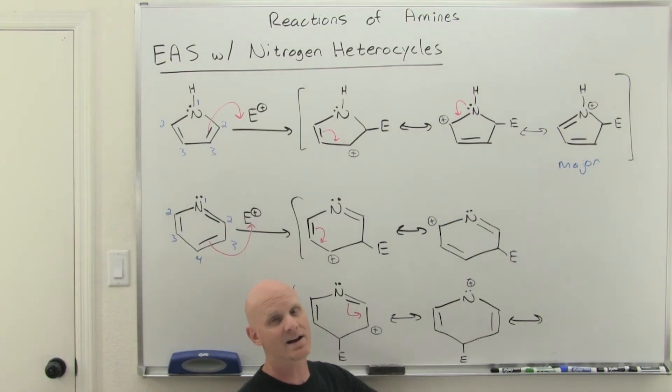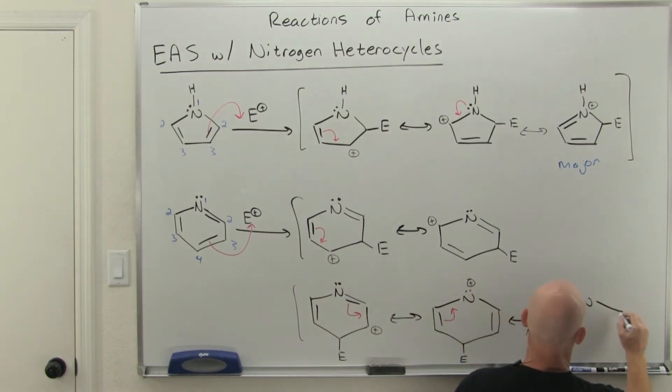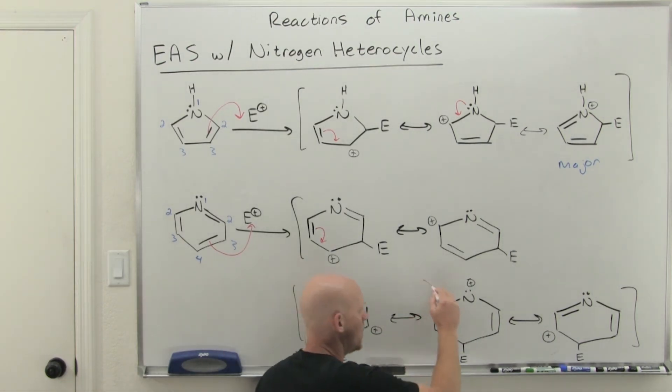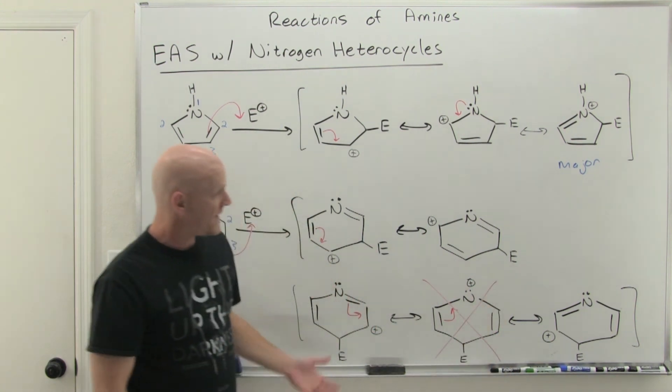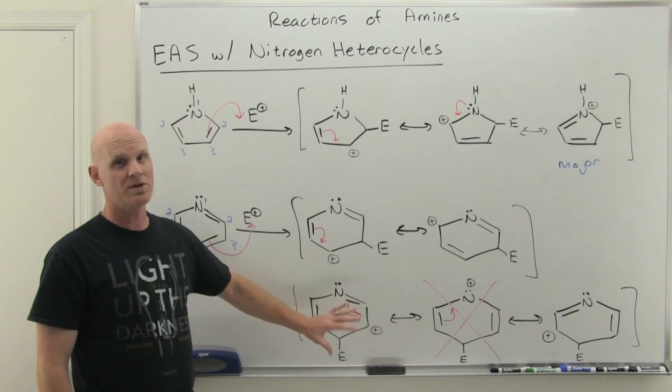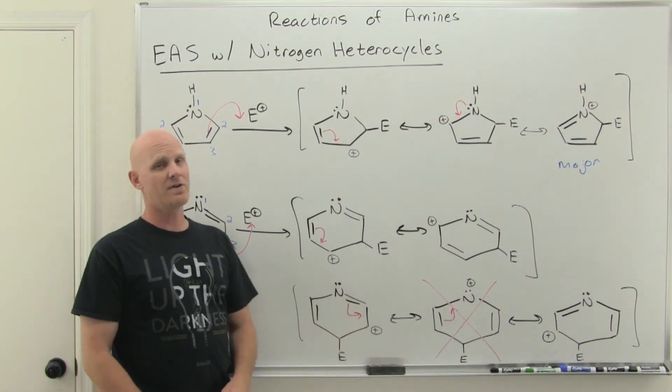Now, carbon not having a filled octet as a carbocation is fairly unstable. Nitrogen cation with no filled octet, crazy unstable. And you might be like, well, Chad, we can do more resonance. You're right. We can do more resonance. So we get actually more resonance structures in this second example. But the problem is having one of those resonance structures being a nitrogen with no filled octet is absolutely horrible, never going to happen kind of a thing. And so that's why it turns out substitution is going to happen at the three position with pyridine because happening at the two or four would just be absolutely terrible for the stability of our intermediate.